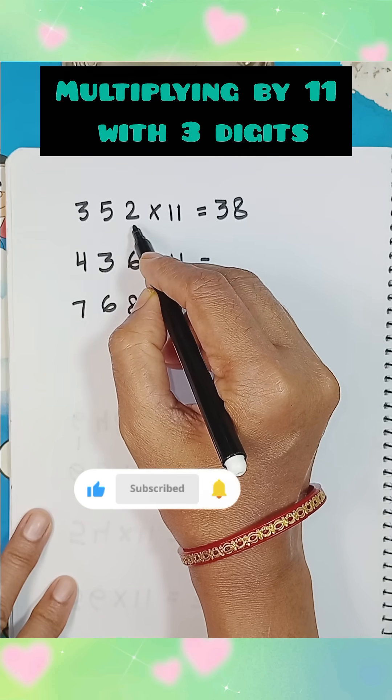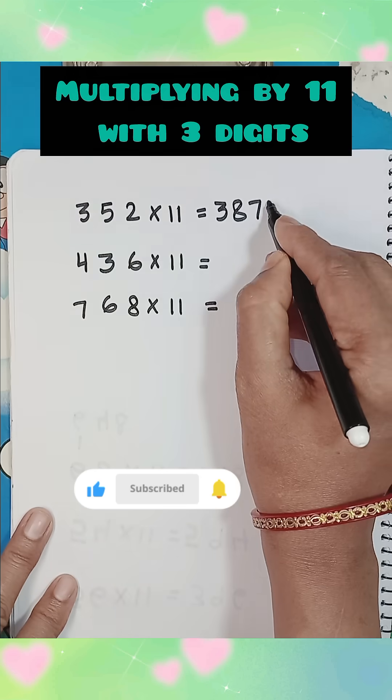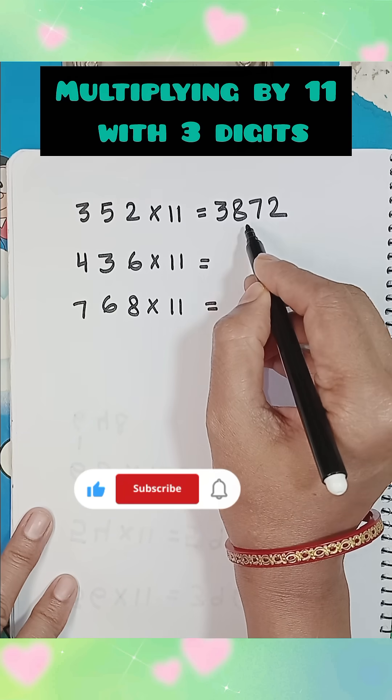Now add 2nd and 3rd digit, 5 plus 2, it will be 7, write the last digit, 3872.